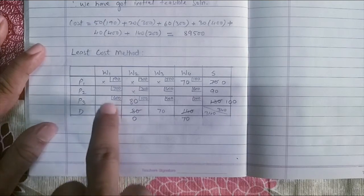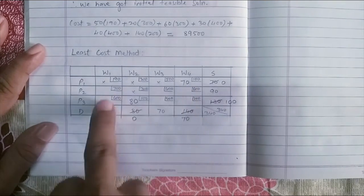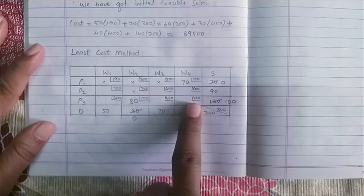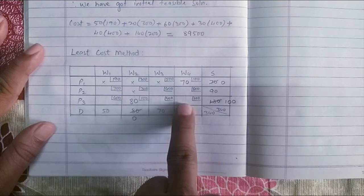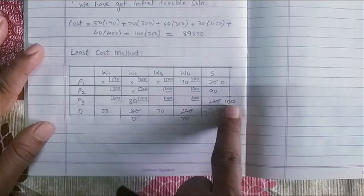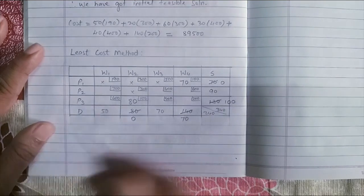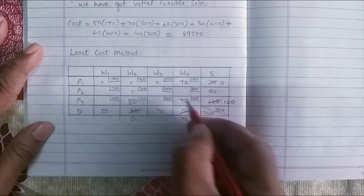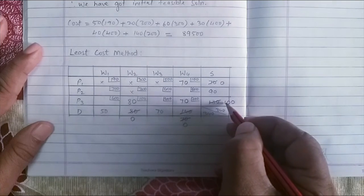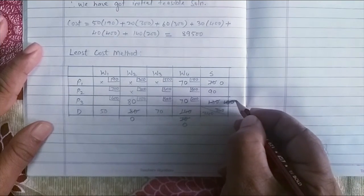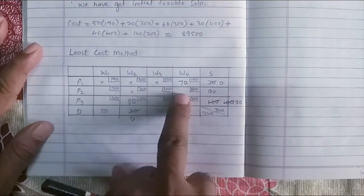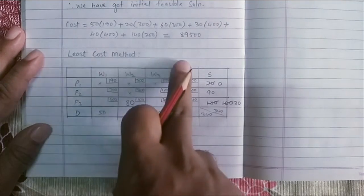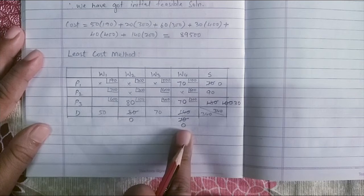Again, check for the least value among the ones which are not allocated. We have 700, 400 here. The least is 200. So next allocation will happen in this cell. Again, compare these two values. We have 100 supply, 70 in demand. So I will assign 70 in this cell, the least value. Subtract 70 from both the values. So I get a 0 here. So there is no allocation. I will put a cross here. And this is 0. This cell or this column is now completed.